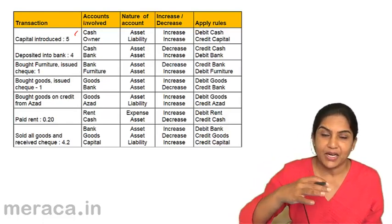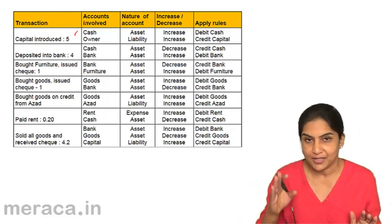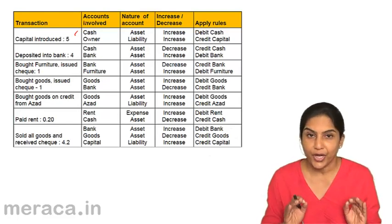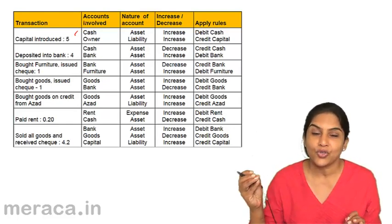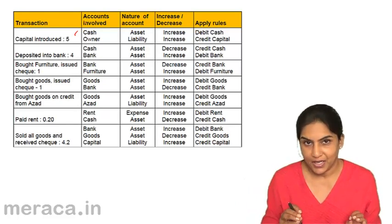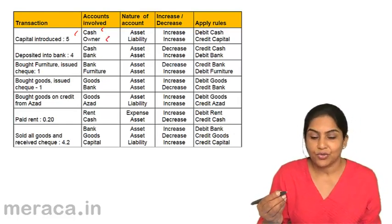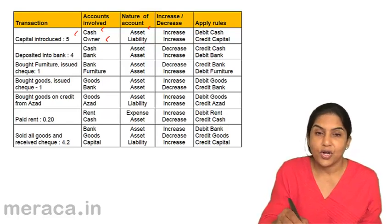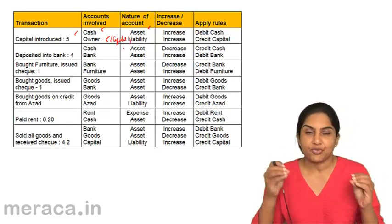Once the proprietor has given money, it is as if the proprietor is lending money to the business. In the books of the business — remember, there are two separate entities: the owner is separate, the business is separate. We are recording transactions in the books of the business. The business owes this money to the proprietor. The liability of the business to the proprietor is called capital. So the two accounts involved are cash and owner's account, which is represented as capital.